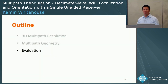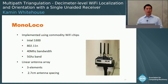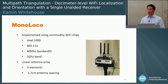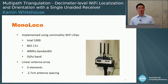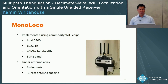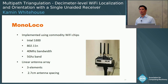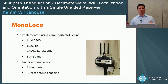We implemented this system as what we call monoloco, using commodity Wi-Fi chips — the Intel 5300, which is common in CSI-based work. We ran multipath localization using the 802.11n protocol with about 40 megahertz of bandwidth, which would give only about 7.5 meters of time-of-flight resolution — very coarse — but still enough to run multipath triangulation. We operated in the 5 GHz band and used a linear antenna array with three elements and 2.7 centimeter spacing, similar to a standard off-the-shelf Wi-Fi access point. A circular array or larger spacing would only improve results.